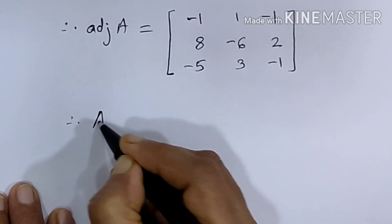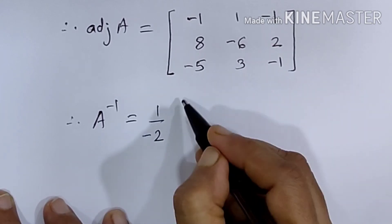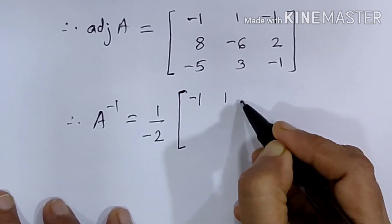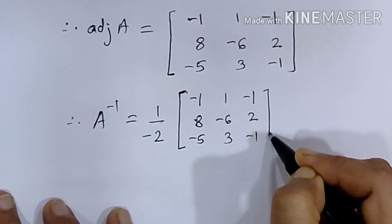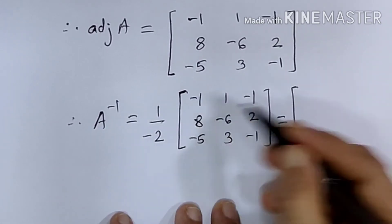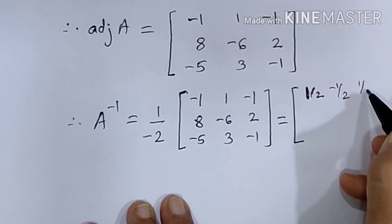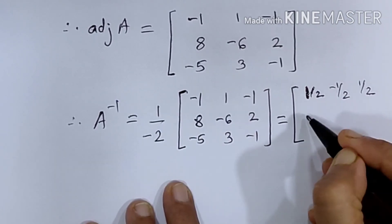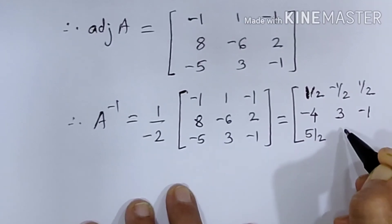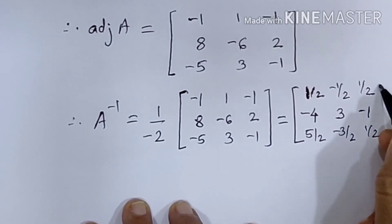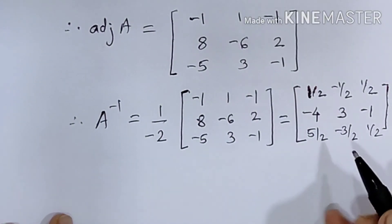Using the formula, A inverse is equal to 1 upon determinant of A. We know that determinant of A is minus 2, so it is 1 upon minus 2, multiplied by the adjoint matrix [−1, 1, −1; 8, −6, 2; −5, 3, −1]. Applying scalar multiplication, A inverse equals: first row 1/2, −1/2, 1/2; second row −4, 3, −1; third row 5/2, −3/2, 1/2. So we have found A inverse using the adjoint method.